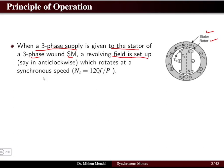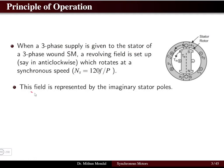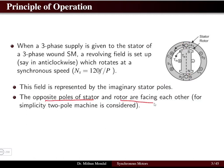The stator is the stationary part where the three-phase supply is given, and the rotor is the rotating part. When a three-phase supply is given to the stator of a three-phase synchronous motor, a revolving field is set up. In AC machines — whether an induction motor or a synchronous machine — a rotating magnetic field is produced when a three-phase supply is given to the stator coils. This revolving field rotates at synchronous speed given by 120f/P.